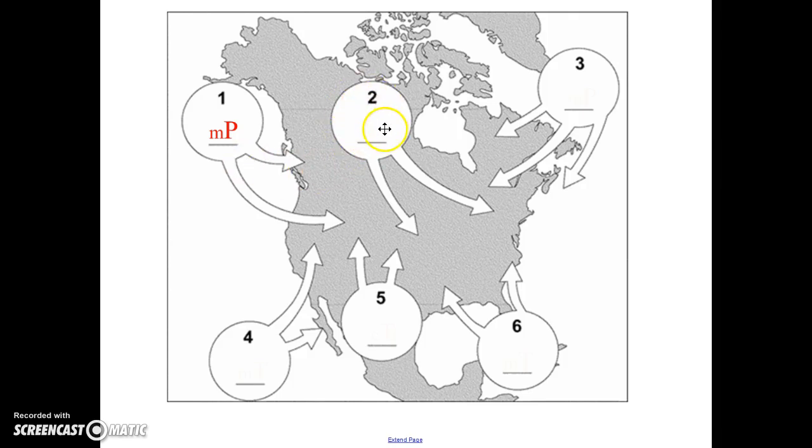Number two is on central Canada. So it's going to be dry or continental. And it's going to be cold or polar.